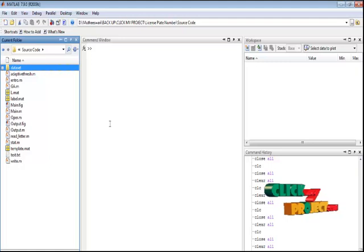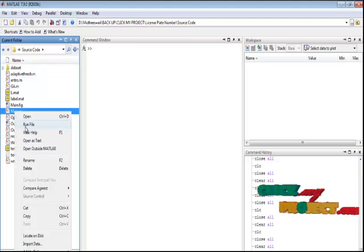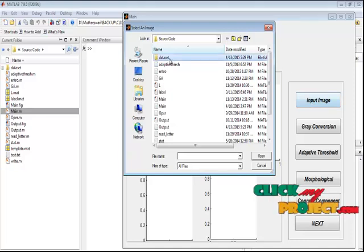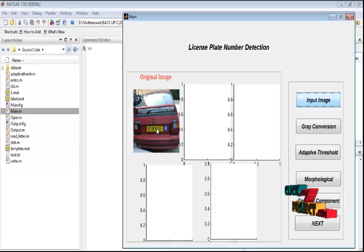Let's discuss the running procedure. Select the main.m file in the current folder. Right-click that file and run to execute the process. This is the main window for license plate number detection. By pressing the input image button, we can browse the input image from the dataset folder. Select any image from the dataset folder and display the input image in axis one plot.